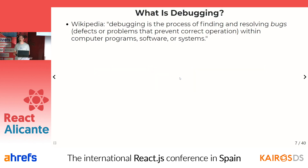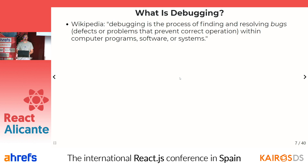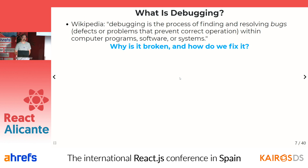If you go to Wikipedia and look up the concept of debugging, it says it's the process of finding or resolving bugs — defects that prevent the software from working correctly. In other words: why is it broken and how do we fix this?